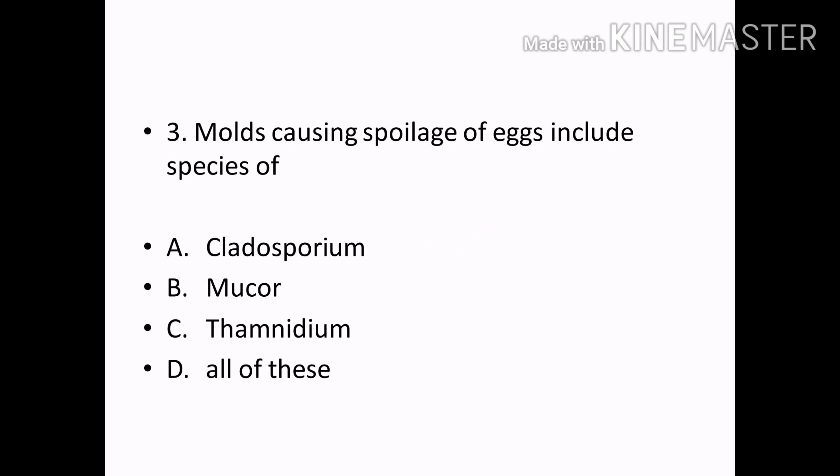Molds causing spoilage of eggs include species of: Options — Cladosporium, Mucus, Thaminidium, All of these. Correct answer: Option D — All of these.